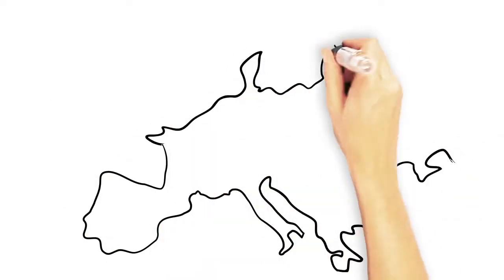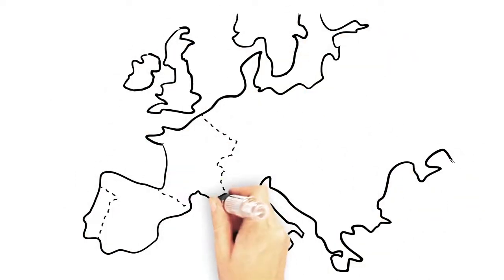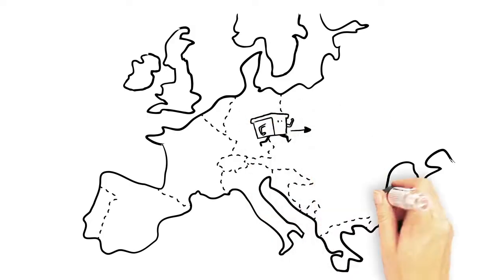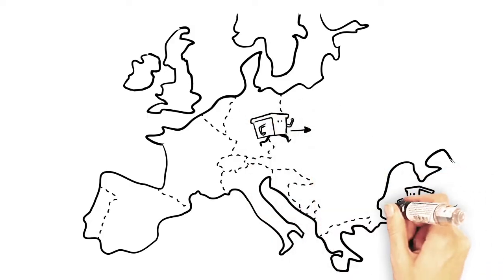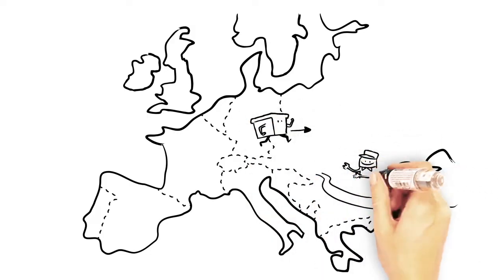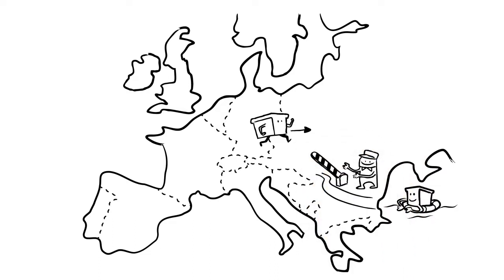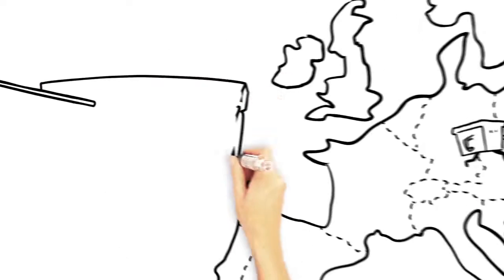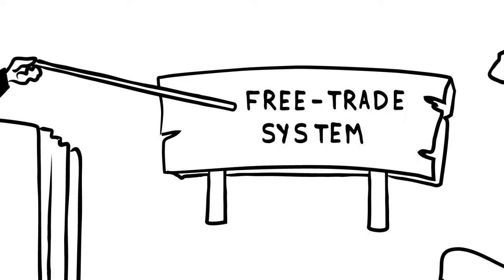The starting point of his theory is that the economic system of all countries must allow for the free circulation of goods and services by eliminating customs duties and everything that can hinder trade. This is called a free trade system.